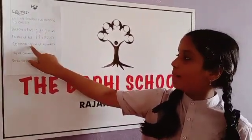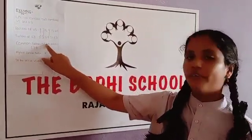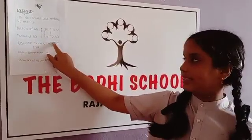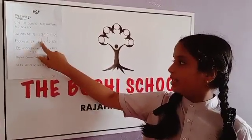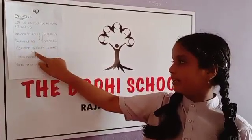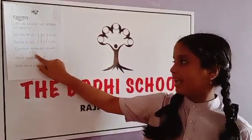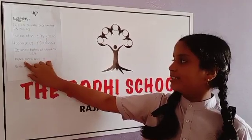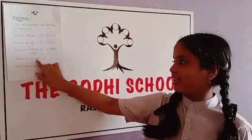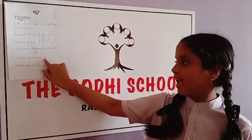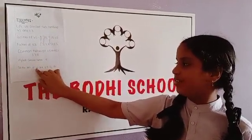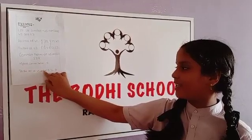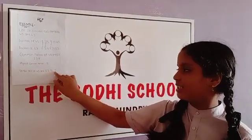Common factors of 45 and 63 are 1, 3, and 9. The highest common factor is 9. So the HCF of 45 and 63 is 9.